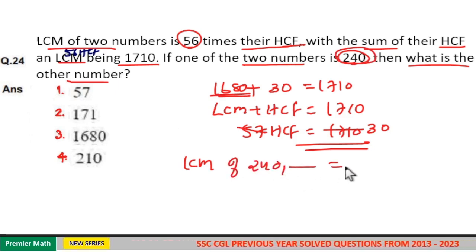If you look at this, 57 is not a multiple of 1680. 171 is not a multiple of 1680.